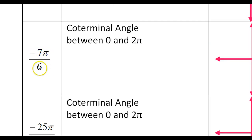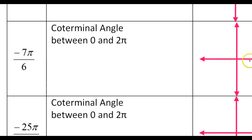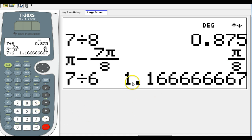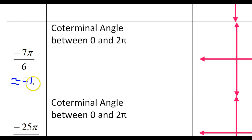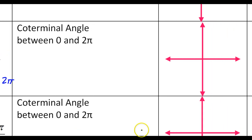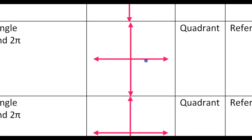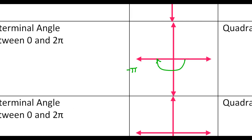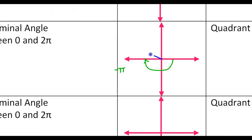Next, we have negative 7 pi over 6. Be careful — when we graph this, it is negative, so we will be going clockwise. 7 over 6 is bigger than 1, so it's like a little bit more than 1, about 1.2. So we're talking about approximately negative 1.2 pi, just to give you a feel for it. As I go to do a sketch, I'm moving clockwise because it's negative. If I went all the way to here, that would be negative pi so far, but I have to go a little bit further — a little bit past negative pi — which puts me into the second quadrant.